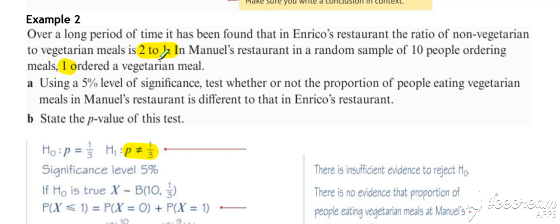So two to one, therefore one third of the meals are vegetarian and two thirds are not. So our p-value to be tested is one third.